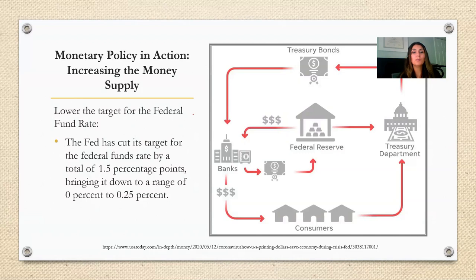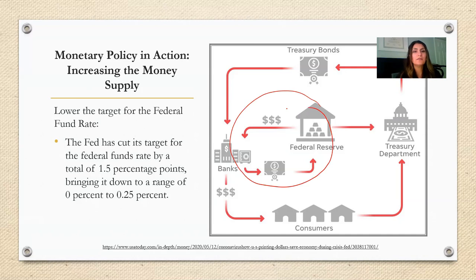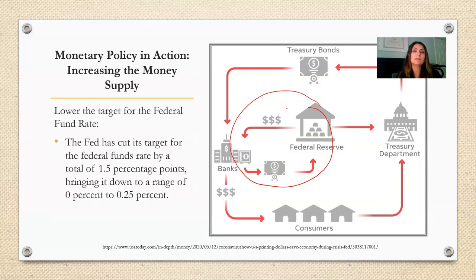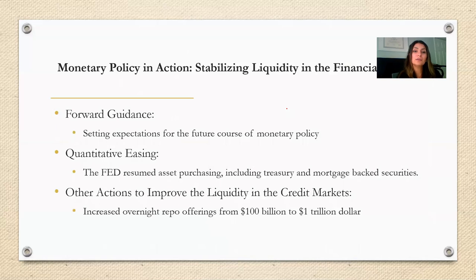The Federal Reserve has its own policy tools to increase the money supply. One tool is conducting open market operations, which involves buying and selling U.S. government bonds. When the Federal Reserve buys U.S. government bonds from banks, it adds more money to bank reserves. When banks have more money in their reserves, they are more likely to lend to consumers and businesses, which increases the money supply and lowers interest rates. Other tools include setting expectations for future interest rates with forward guidance and buying mortgage-backed securities in addition to government bonds with quantitative easing.